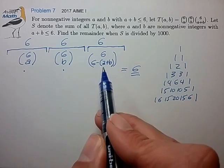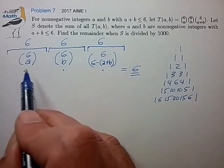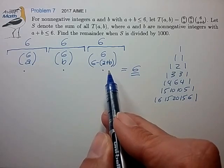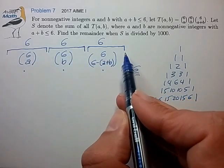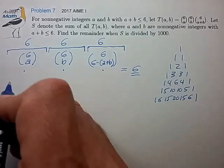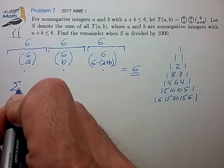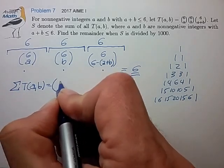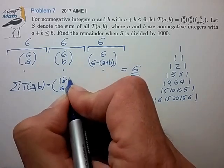And what that means is that when we take the sum of all possible terms where the three groupings add to six, what that is is basically a roundabout way of computing all the combinations of the 18 elements taken six at a time. So we realize that this sum, T(a,b), is really just equal to 18 choose 6.